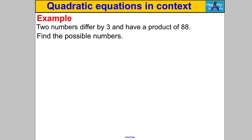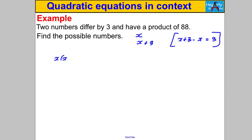Next example — pause the video and have a go. We're told two numbers differ by 3 and have a product of 88; find the possible numbers. Let the first number be X and the other be X + 3 — since X + 3 is 3 more than X, they differ by 3. We're told their product is 88, so X(X + 3) = 88. Expanding: X² + 3X = 88.